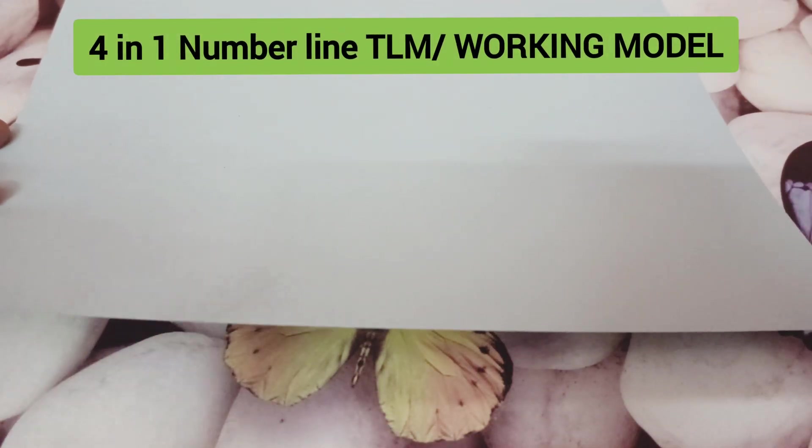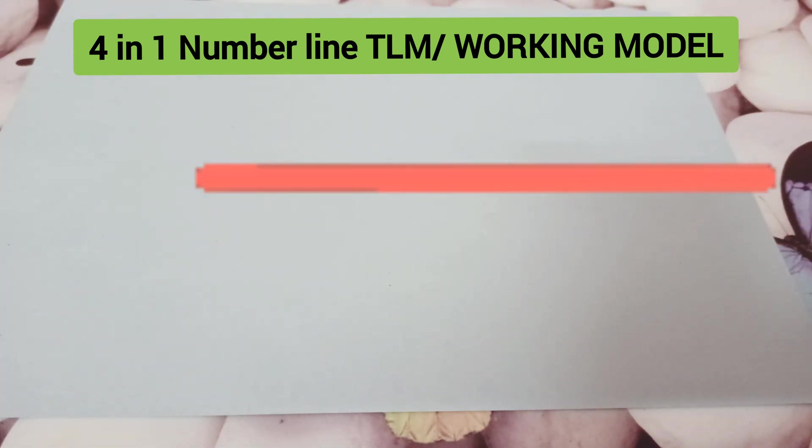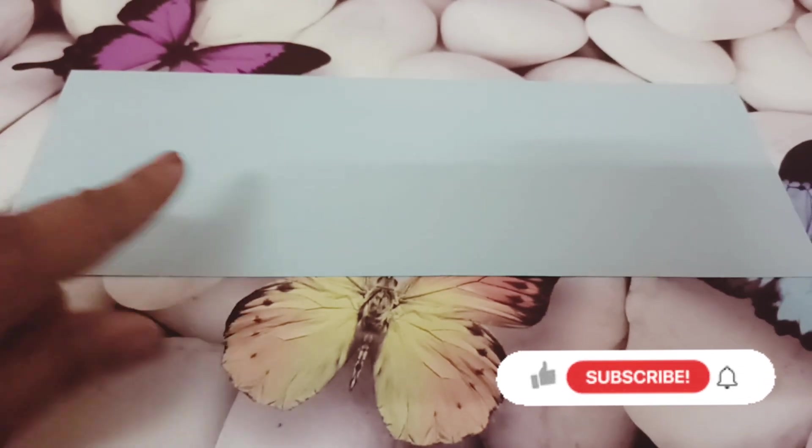To make a 4-in-1 number line TLM, here I have taken one sheet. You can see the thickness of the sheet. Now we will cut the sheet into half. Here I have half cut sheet.